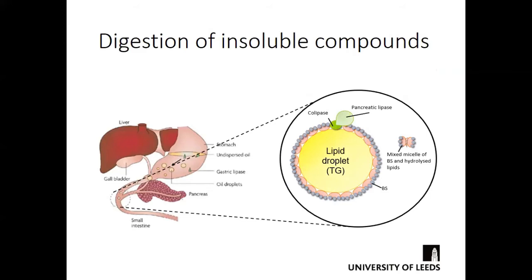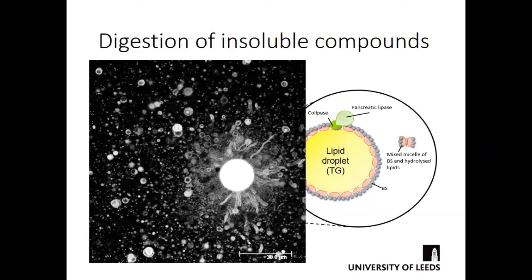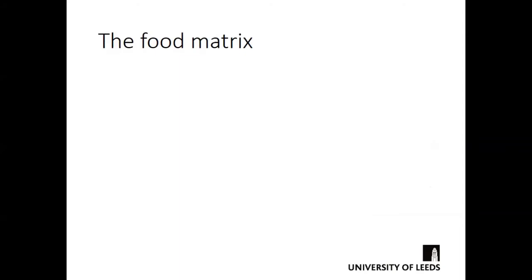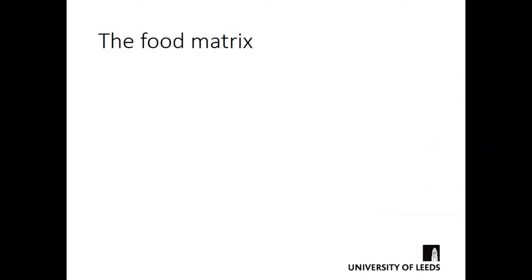Lipid digestion is complicated because all the components are insoluble. A lipid droplet is surrounded by bile salts with co-lipase anchored to the surface, to which pancreatic lipase is linked, generating mixed micelles. However, in detail you see a real range of different structures present, and it's very hard to be sure what structures are really going to be formed and what will be carried through to the site of absorption — different structures are formed depending on the food matrix.